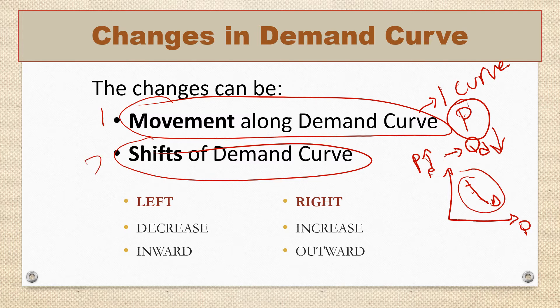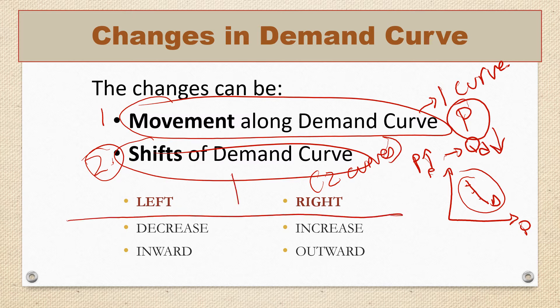When talking about shifts of the demand curve, I will be talking about two different curves. If my curve shifts to the left, it means my demand curve is decreasing or shifting inward, and this is due to the factors or demand shifters. If my demand curve is shifting to the right, there is an increase in my demand, or my demand curve is shifting outward.